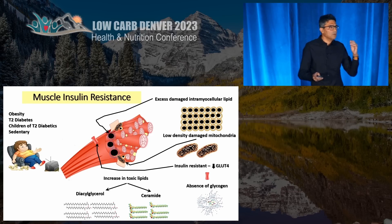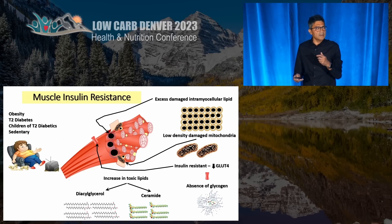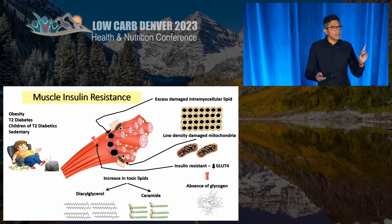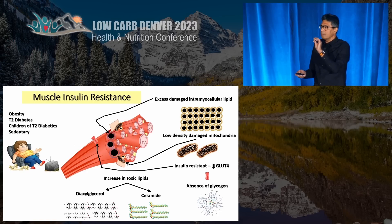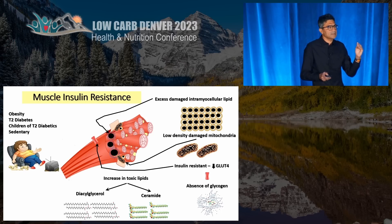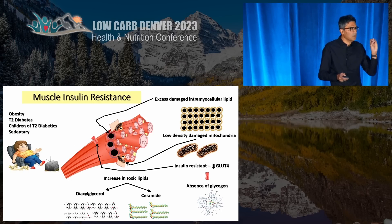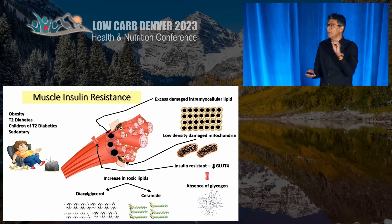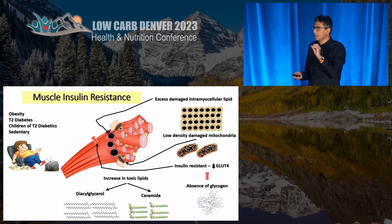On the other hand, if you have obesity, diabetes, or sedentary behavior, the mitochondria are unhealthy — fewer in number, diseased, not clearing the fat. The fat gets rancid, and as the fat gets rancid, it can get converted to toxic fat molecules called ceramide and diacylglycerol.